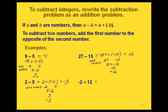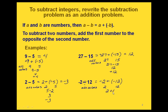One more example. Notice that when we do this, we don't change anything with the first number. So if we have negative 2 minus 12, when we rewrite this we still have negative 2. What we're rewriting is the second part — we change the minus to plus the opposite of 12. So we end up with negative 2 plus negative 12. Since these have the same sign, we add the absolute values: 2 plus 12 is 14, and we take the sign they had in common, which is negative. So our final answer is negative 14.